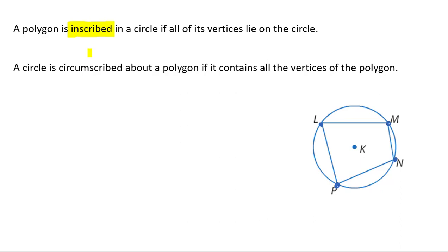A circle is circumscribed about a polygon if it contains all the vertices of a polygon. So LMNP. You can also have a polygon. I'm going to try my best here to draw this. That is circumscribed about a circle. So that polygon, I'm going to call it ABCD, is circumscribed about our circle X.